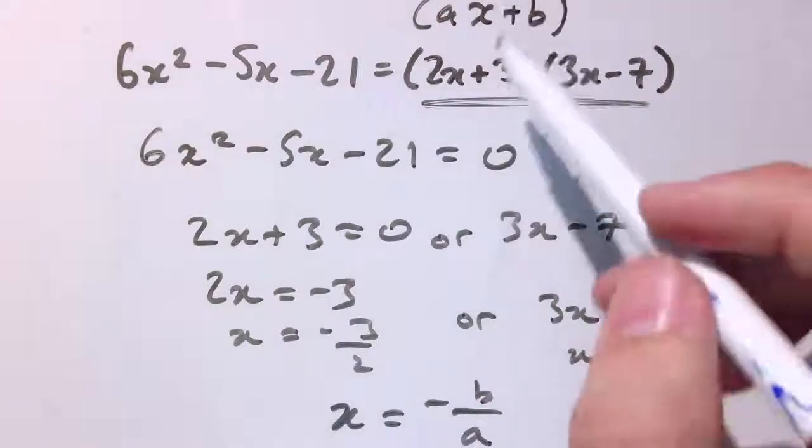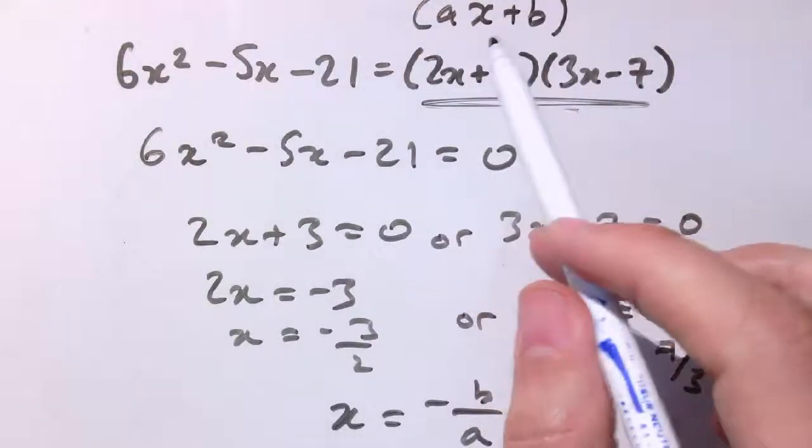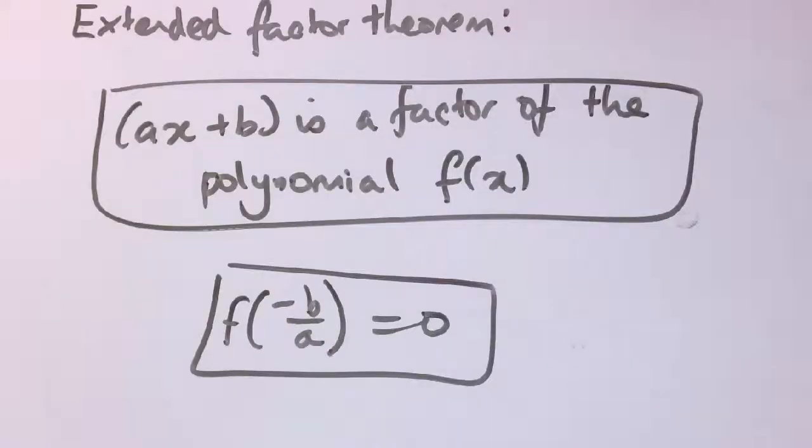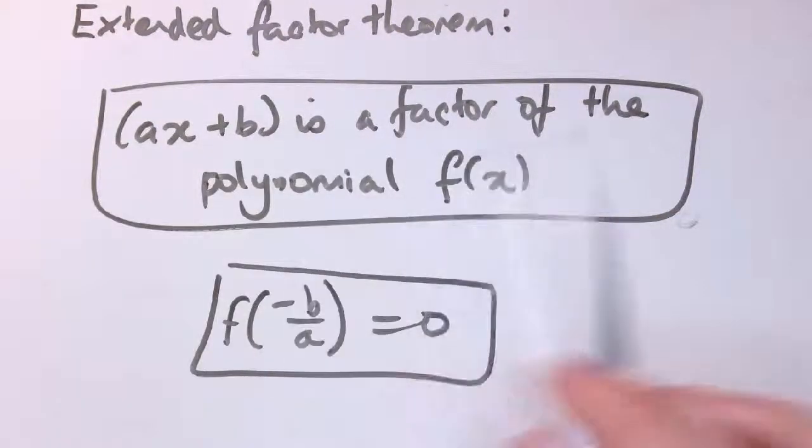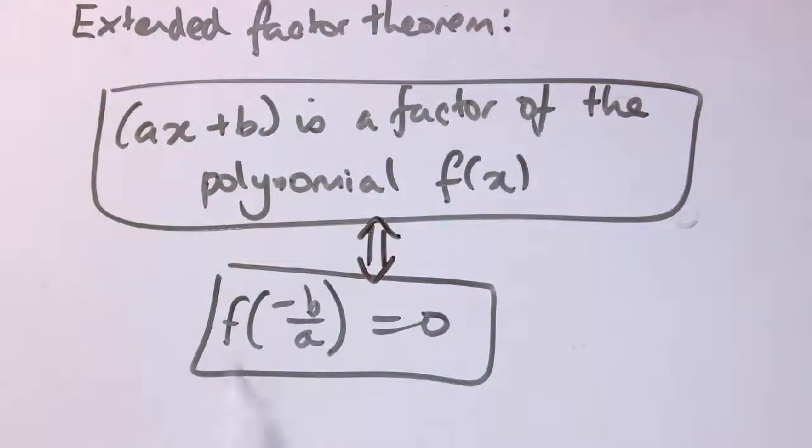The extended factor theorem says that if ax plus b is a factor, then minus b over a is a root, and equivalently, if minus b over a is a root, then ax plus b is a factor. It says that if ax plus b is a factor of the polynomial f(x), that's true if and only if f of minus b over a is zero, i.e., minus b over a is a root of f(x) equals zero.